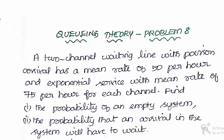A two-channel waiting line with Poisson arrival has a mean rate of 50 per hour and exponential service with mean rate of 75 per hour for each channel. Find the probability of an empty system and the probability that an arrival in the system will have to wait.